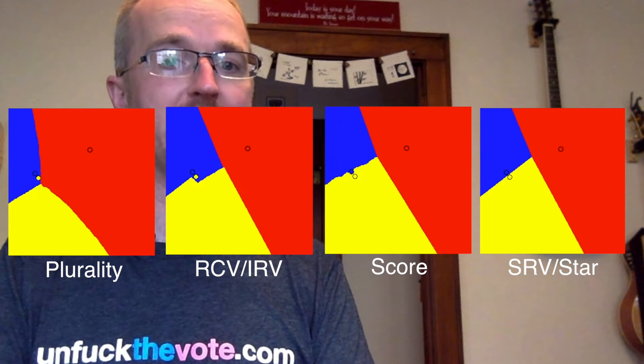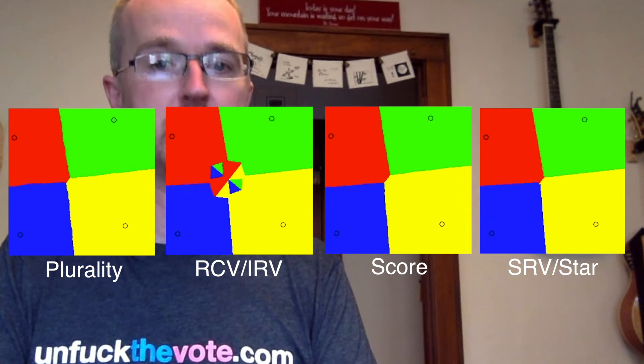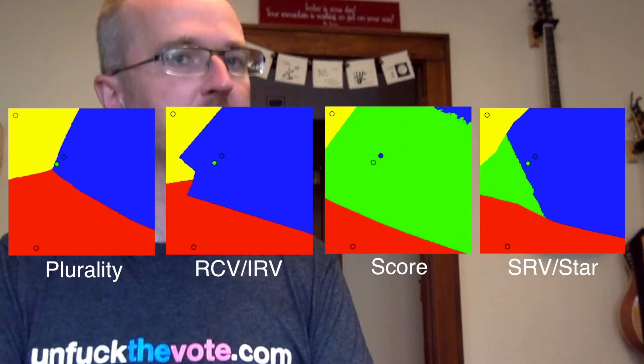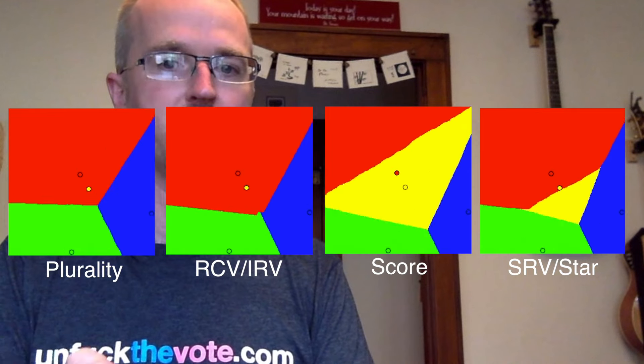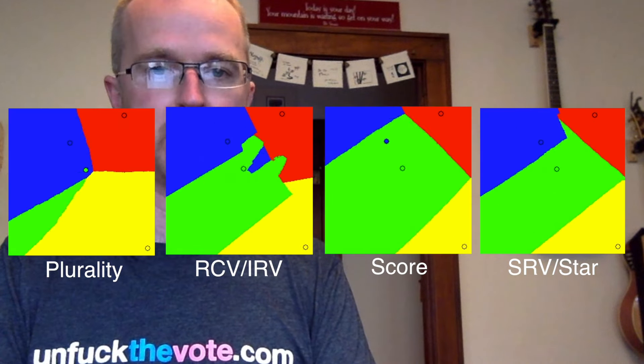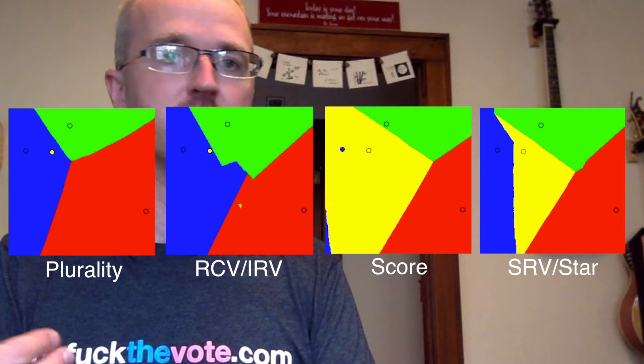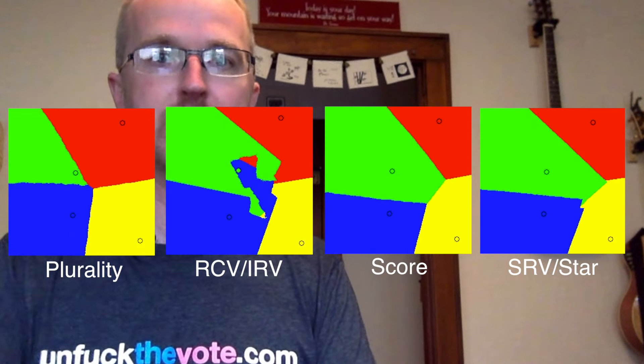Ranked choice voting has much of the same spoiler center squeeze dynamic that plagues our current voting system. Because of the peculiar way instant runoff is tabulated, the second choices of only some of the voters are taken into account. Far from being a cure for the fundamental ill of our democratic process, instant runoff simply hides the problem behind a complex and error-prone counting mechanism.